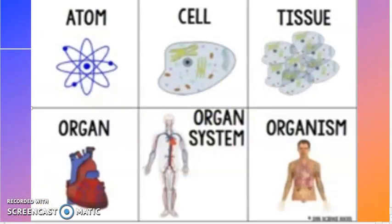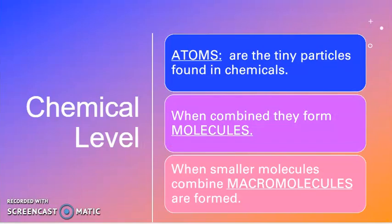However, according to our textbook, the Hole's Anatomy and Physiology Edition 14, they have actually added an entire level. That level is the chemical level. The chemical level consists of atoms, molecules, and macromolecules.